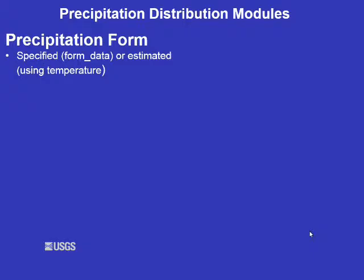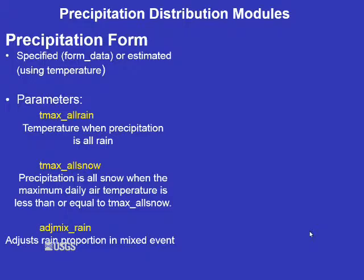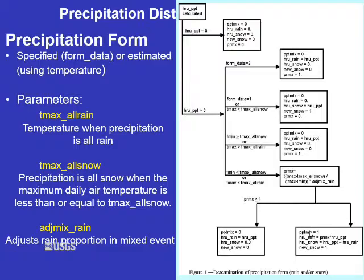Now we will discuss the precipitation distribution modules. All the precipitation distribution modules determine precipitation form — rain or snow. This can either be input in the data file using form_data, or it will be estimated using temperature data. When precipitation form is estimated, the parameters T_max_all_rain, T_max_all_snow, and adjust_mix_rain are used. A flowchart explains how PRMS uses these parameters to determine whether the precipitation is rain, snow, or a mix of rain and snow.